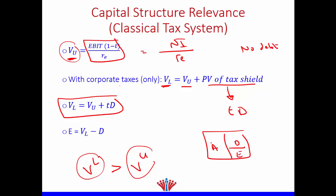Think of the balance sheet as our magic box — assets are financed through debt and equity. The assets represent the value of the levered firm. So if we know the value of the levered firm and the value of debt, we can find equity: Value of Equity = Value of Levered Firm − Debt.